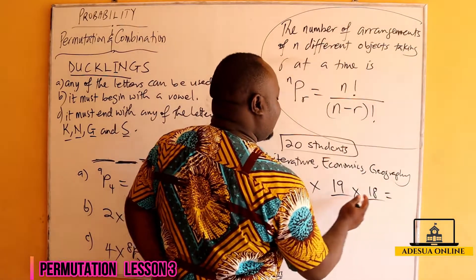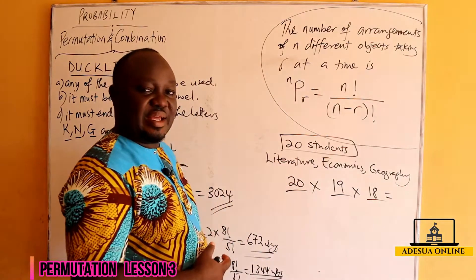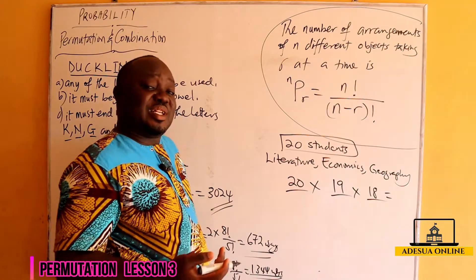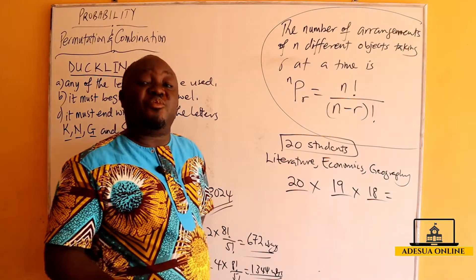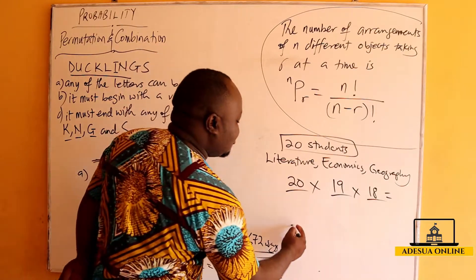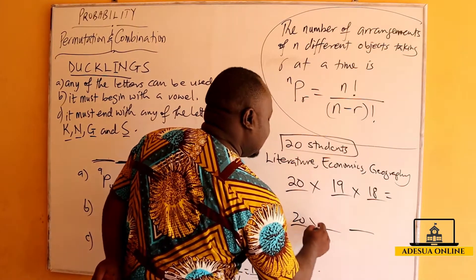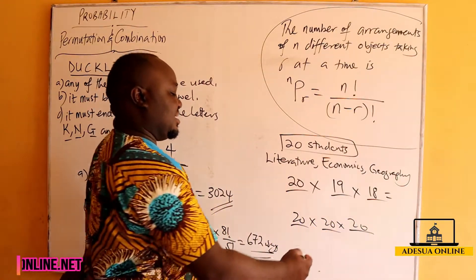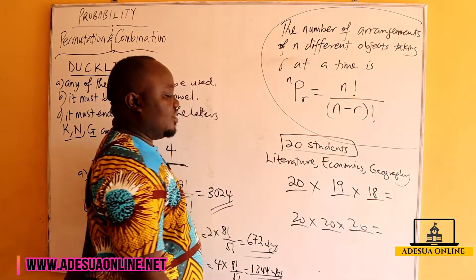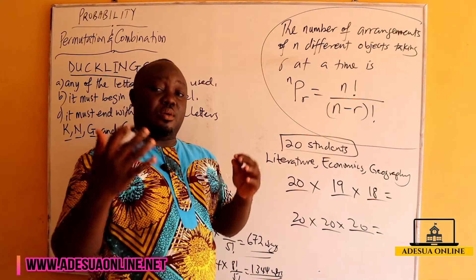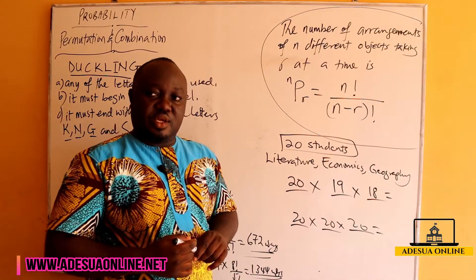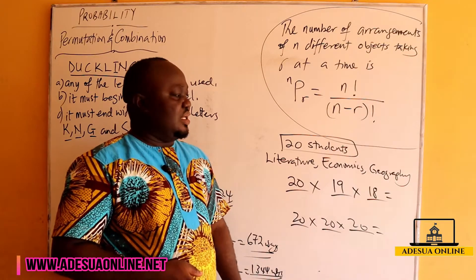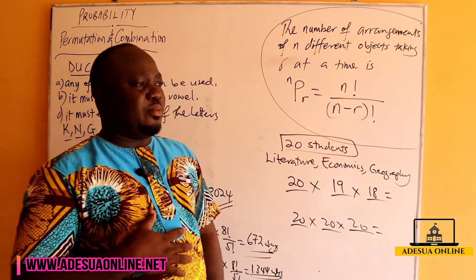So this gives us the number of different ways we can select the three people. If there is another condition where a student can win more than one award, that would be 20 times 20 times 20, giving us another figure altogether — meaning a student is eligible to win all the awards.